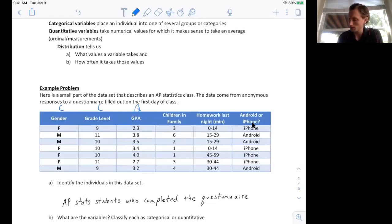Number of children in their family. Again, it makes sense to take an average. The units here would be children.